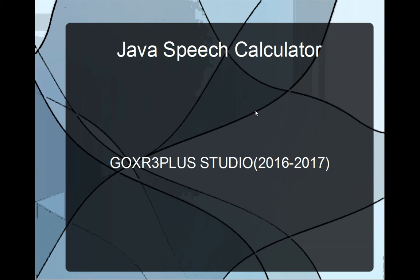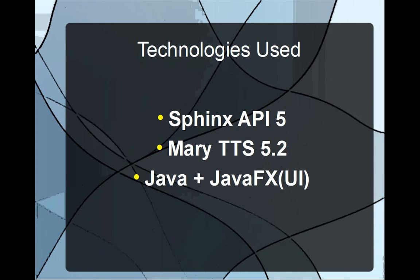Hello everyone, I'm Alex, and this is the final part of our CMU Sphinx tutorial about how to make a speech calculator. I will upload this file so you can see it on your computer. In this final part we will use Sphinx API 4.5, MaryTTS 5.2, Java, and for the user interface we will use JavaFX.